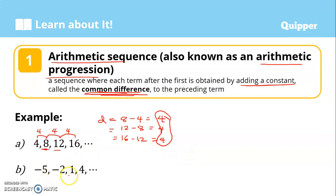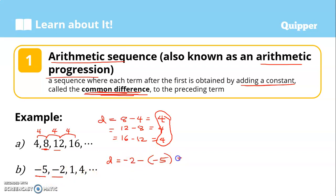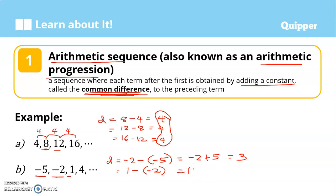Another example: negative 5, negative 2, 1, 4, and so on. Let's check if it's an arithmetic sequence by looking for a common difference. First, negative 2 minus negative 5 — that's negative 2 plus 5, which is 3. Next, 1 minus negative 2, that is 1 plus 2, equals 3. Then 4 minus 1 is also 3. So there is a common difference, and that is why this is an arithmetic sequence.